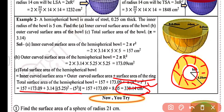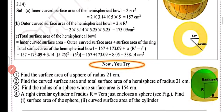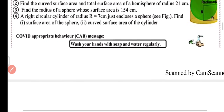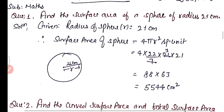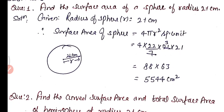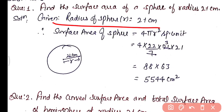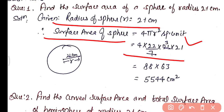Now we have four practice questions. Question number 1: find the surface area of a sphere of radius 21 centimeter. Given radius = 21 cm, surface area = 4πr² = 4 × (22/7) × 21 × 21. After simplifying, you get 88 × 63 = 5544 centimeter square.